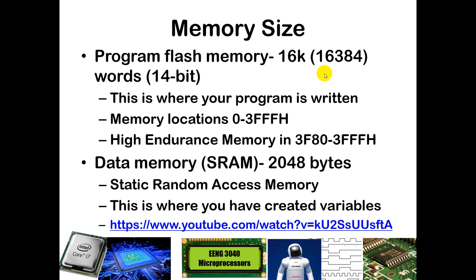We also have SRAM — static random access memory — with 2048 bytes available. That is where you have created variables, whether declaring variables in C or using aliases with an EQU statement in assembly. There is a YouTube video from Microchip linked on the PowerPoint slide that talks a lot about how SRAM works, so if you are interested in learning more I do recommend clicking on that video link.